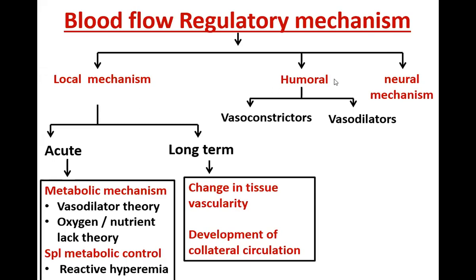Humoral mechanisms involve various substances released into the body whose action is systemic — meaning the action is seen all throughout the body — resulting in vasoconstriction and vasodilation which regulate blood flow. The third is the neural mechanism.